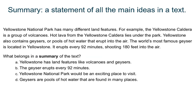Let's practice with a text. Yellowstone National Park has many different land features. For example, the Yellowstone Caldera is a group of volcanoes. Hot lava from the Yellowstone Caldera lies under the park. Yellowstone also contains geysers, or pools of hot water that erupt into the air. The world's most famous geyser is located in Yellowstone. It erupts every 92 minutes, shooting 180 feet into the air.